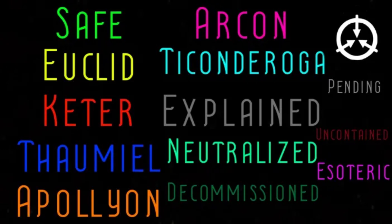Object classes are a rough indicator as to how said SCP should be contained. An SCP's object class is determined by a number of factors, but the most important factors are the difficulty and purpose of its containment.